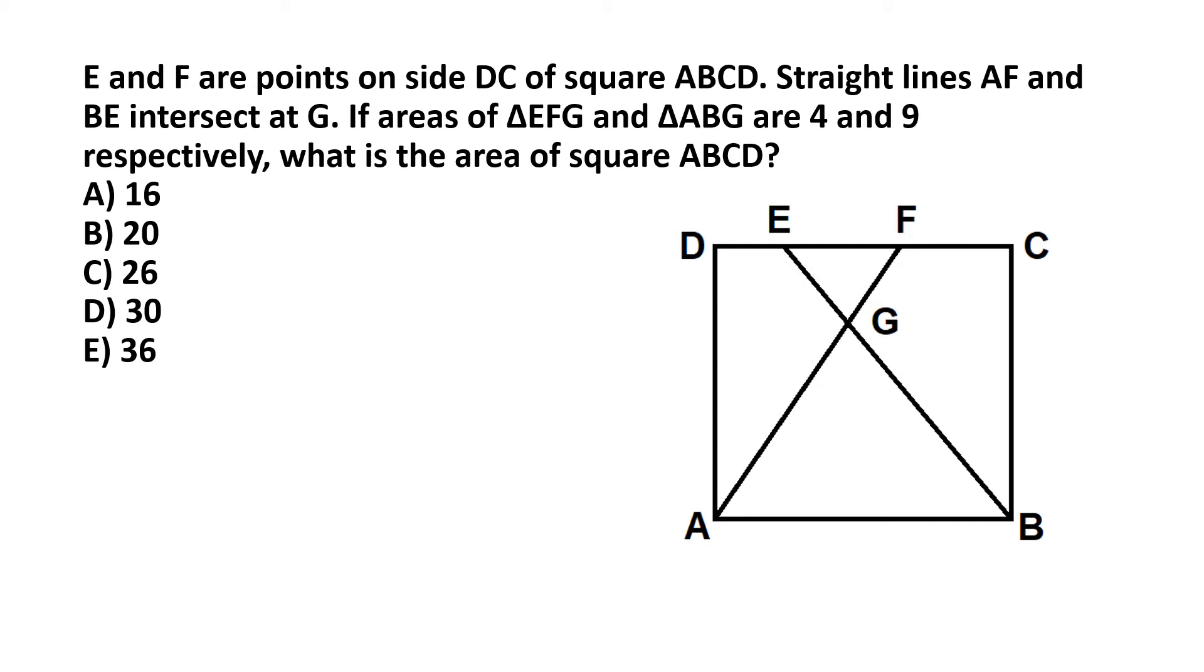E and F are points on side DC of square ABCD. Straight lines AF and BE intersect at G. If areas of triangle EFG and triangle ABG are 4 and 9 respectively, what is the area of the square ABCD?